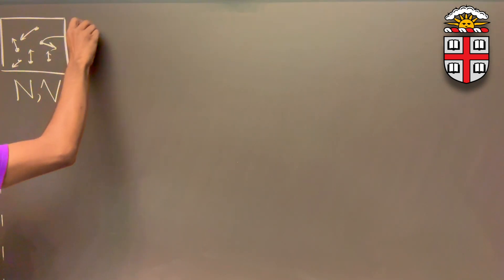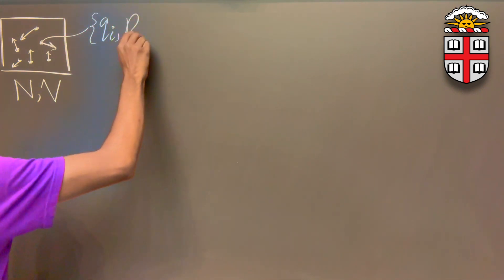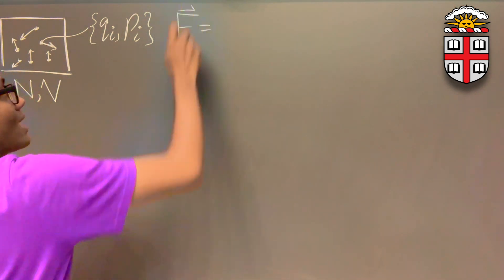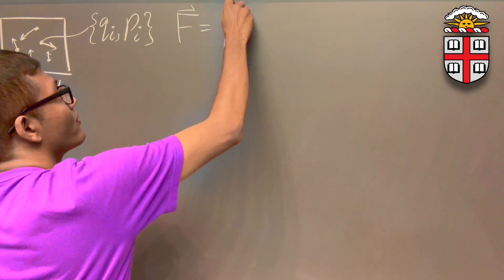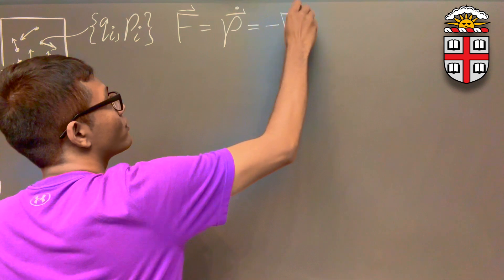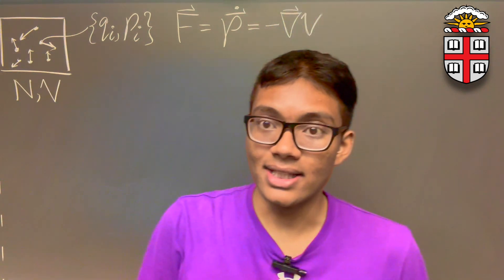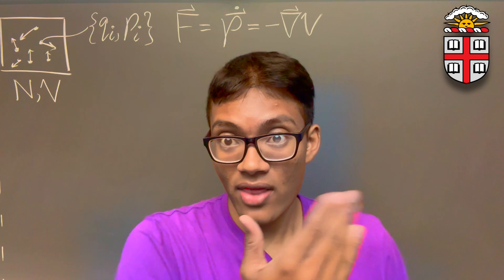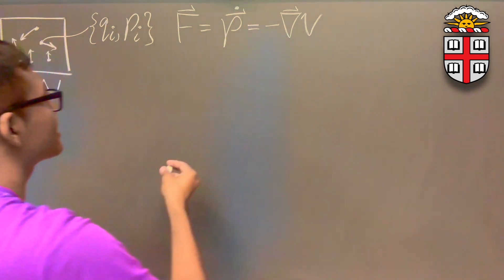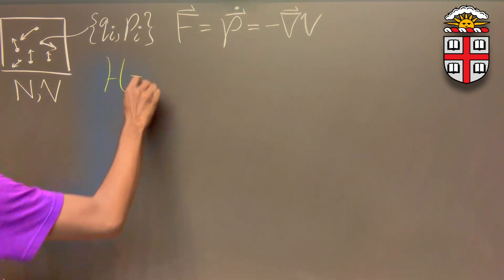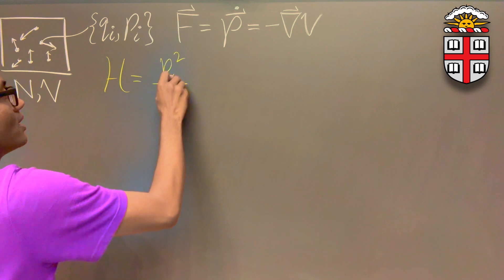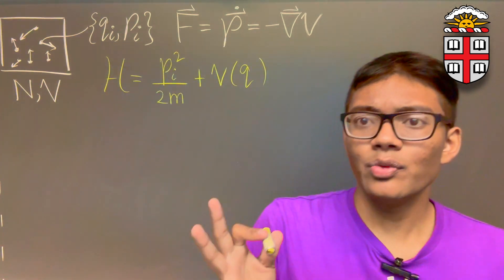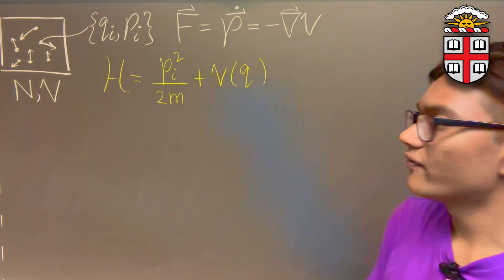Each one of these particles has a coordinate Q sub i and a momentum P sub i. Now, here is the claim. We know from Newton's equations that the force acting on each of these particles can be written as the time derivative of the momenta or the negative gradient of the potential acting on these particles. There's another way we can express these two basic facts using the Hamiltonian instead of the force. Let's say we have a Hamiltonian — a very basic Hamiltonian — one that consists of the kinetic energy, P sub i squared over 2m, plus the potential energy of the system. How do we extract the position and momenta from this Hamiltonian?